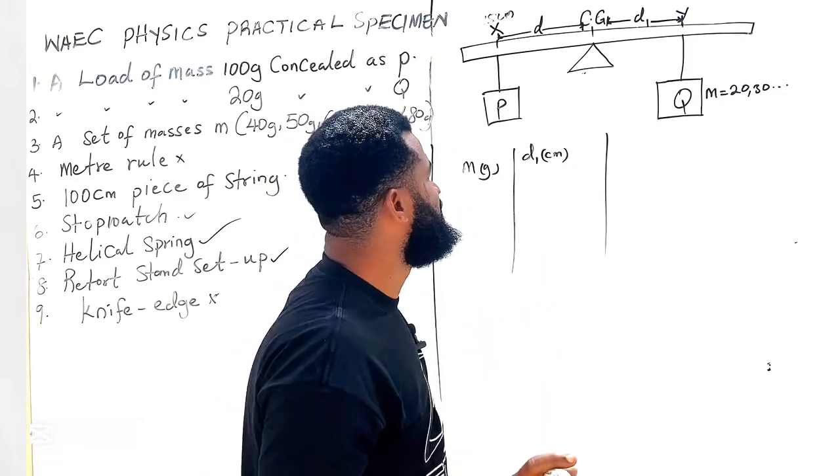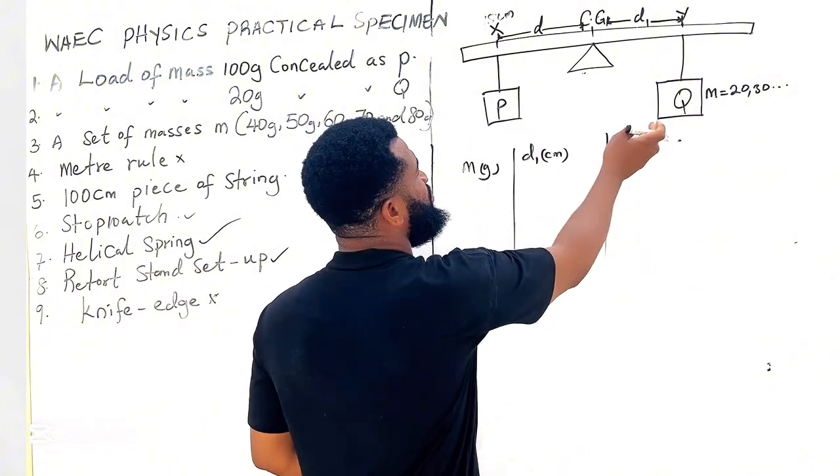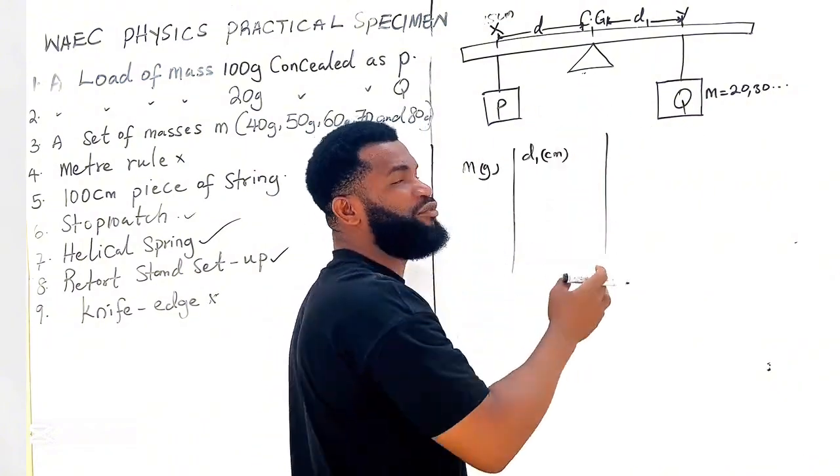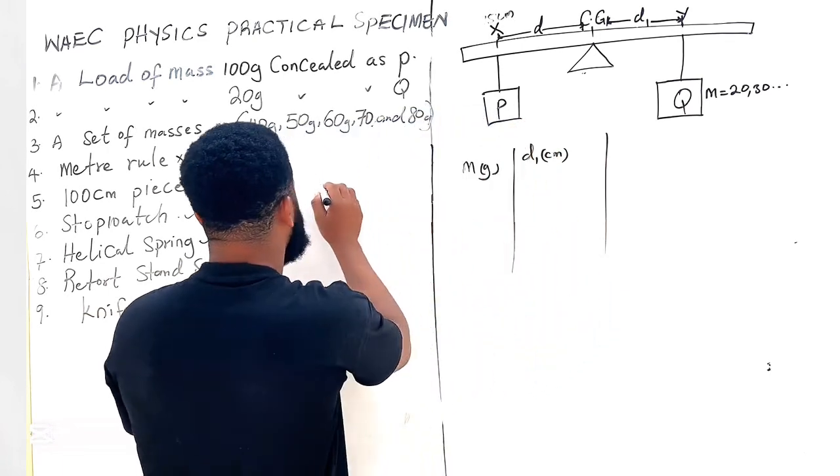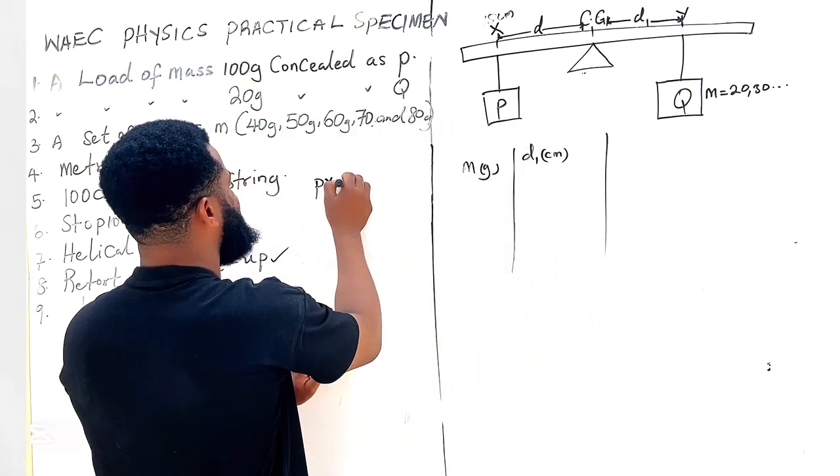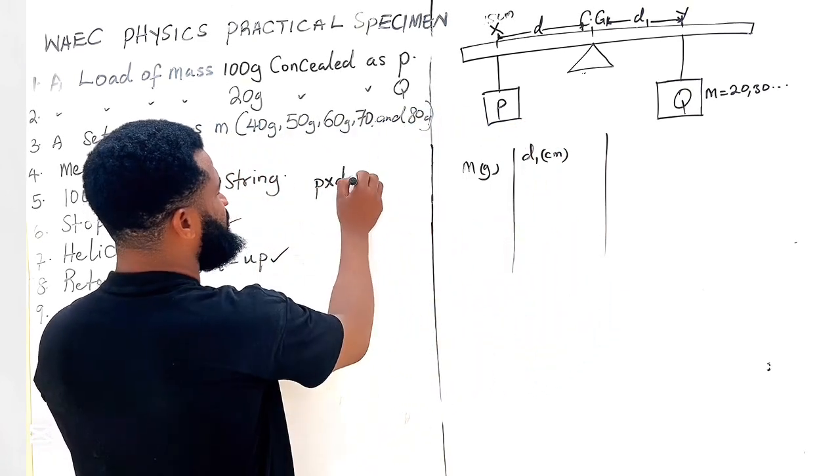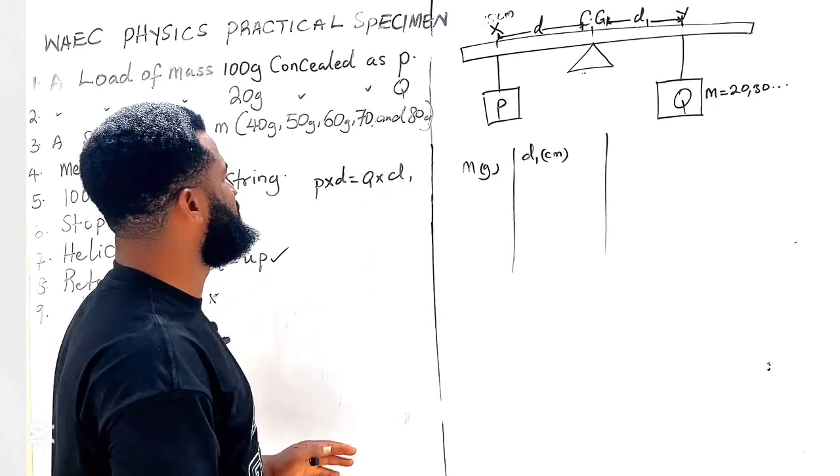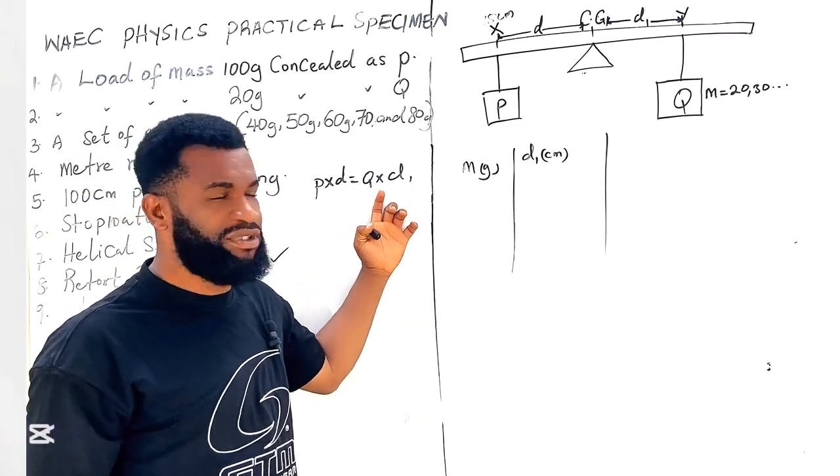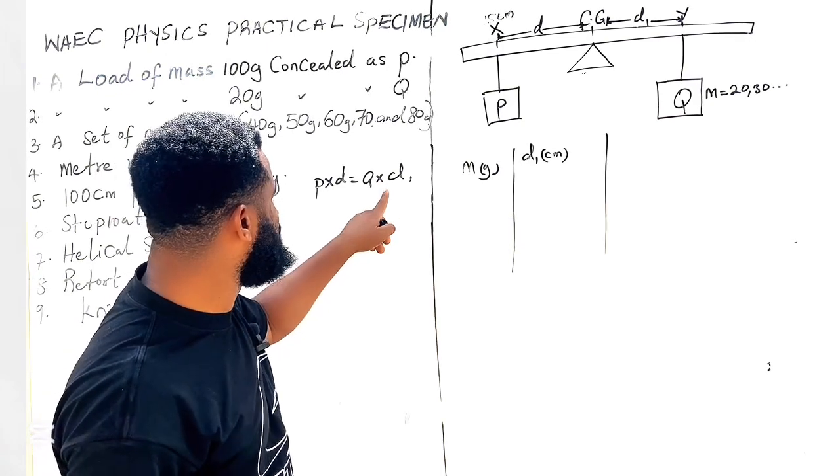Now at the end, the intention is the moment. Remember that there are two masses, clockwise moment must be equal to the anti-clockwise moment. So the first one is going to be P times d, P times d must be equal to Q times d sub 1.